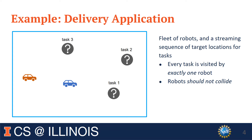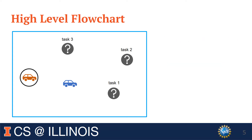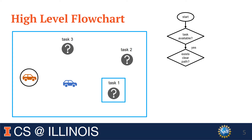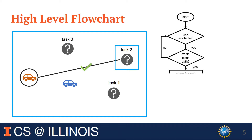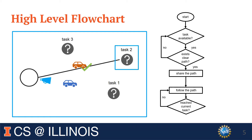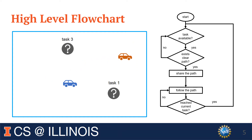A simple approach might look like this. A robot starts by looking for an available task. On finding such a task, the robot checks whether it has a clear path to it. In this case, it is blocked by another robot, so it looks for another task. If this task has a clear path, then it shares its planned path with the other robots and starts to follow the path. While following the path, the robot checks if it reaches the task location. Upon reaching the location, the task is marked complete and removed, and the whole process repeats until there are no more available tasks.